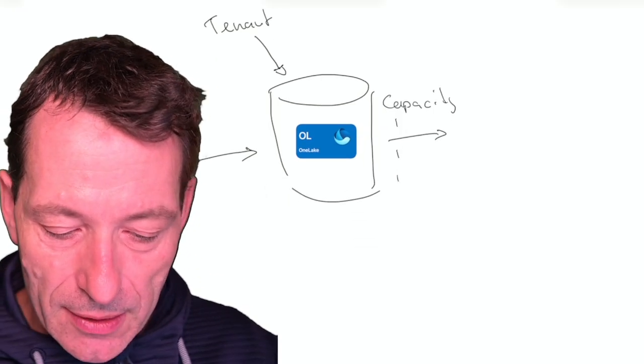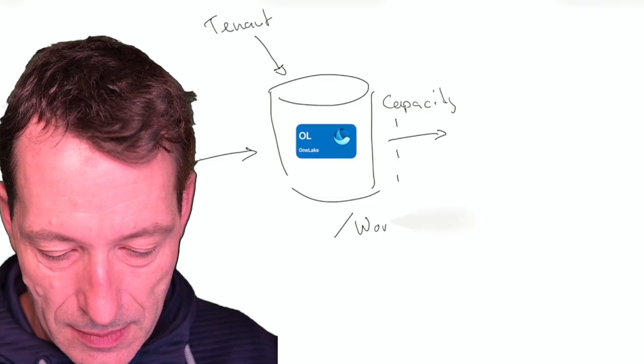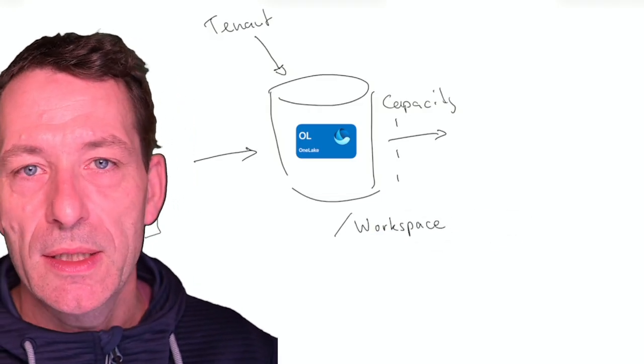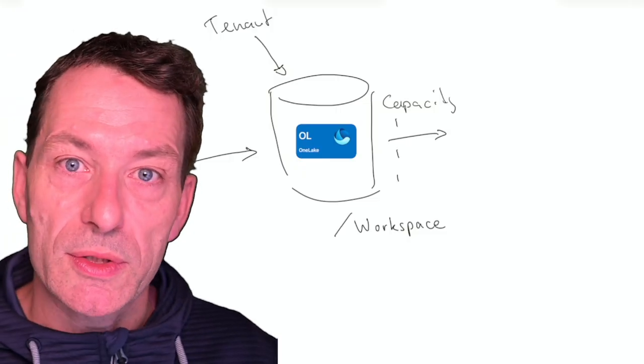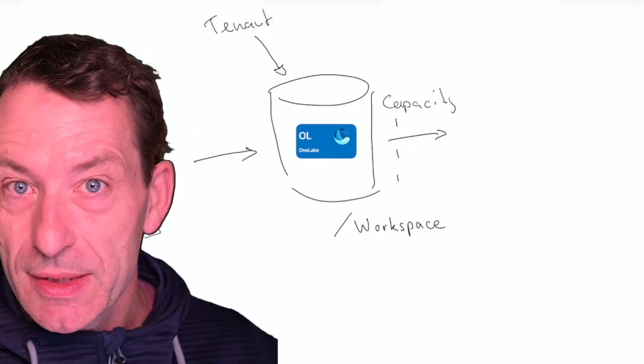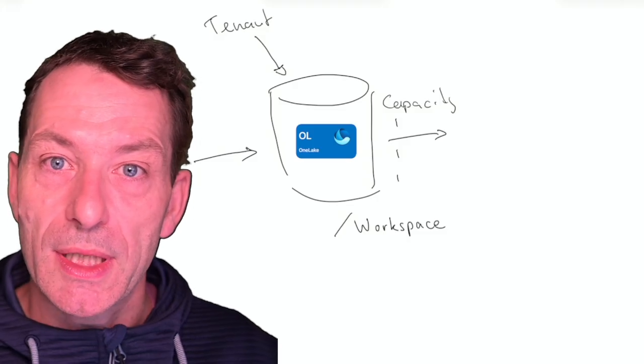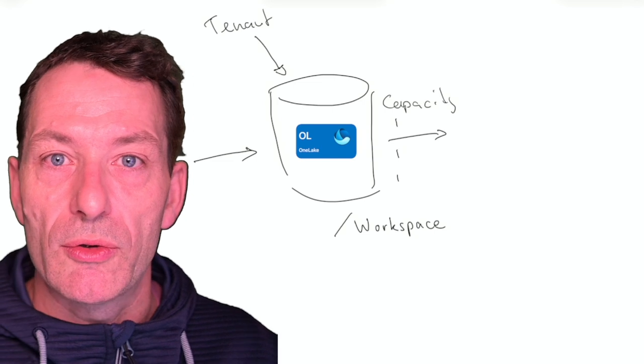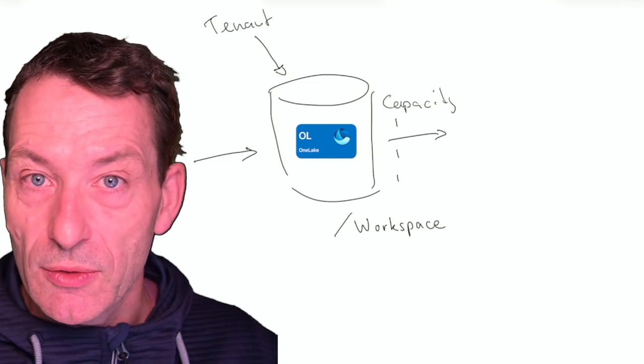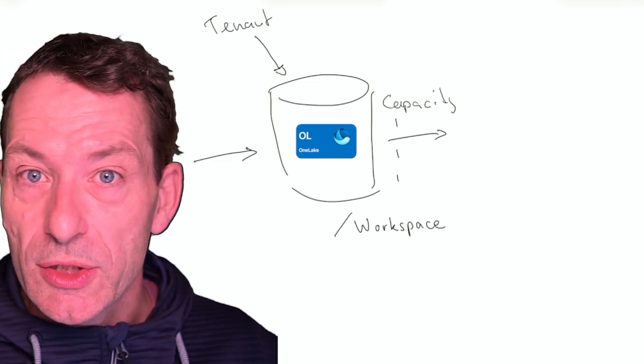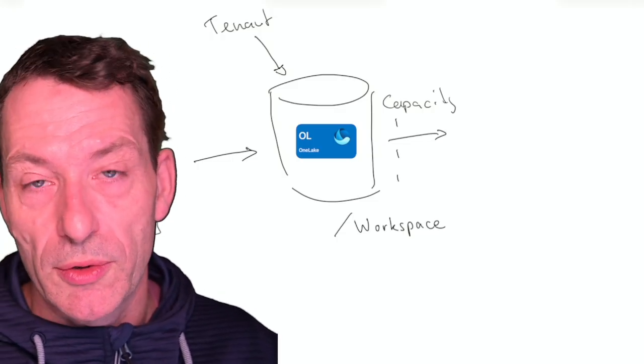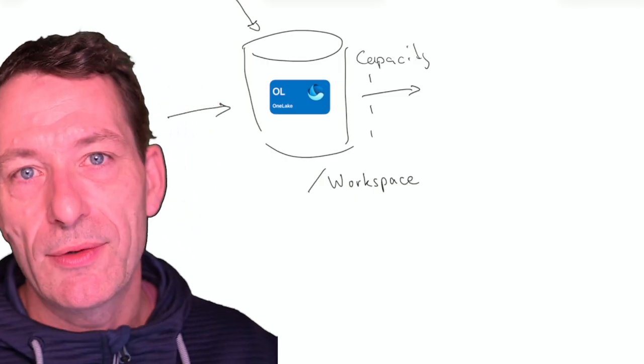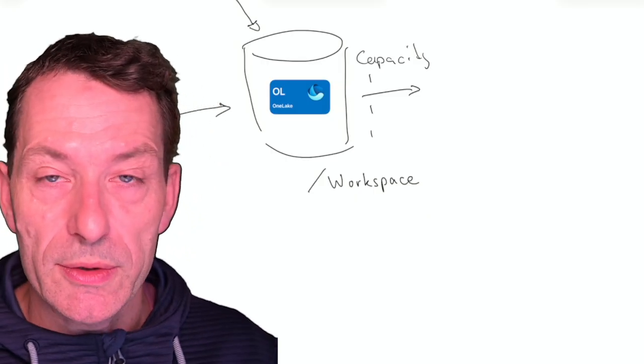The OneLake itself then is organized in workspaces. You can take the workspace as the main principle for OneLake because all security, a lot of settings, and all items are aligned always to one workspace. So it's a little bit like a drive in Windows or a site in SharePoint, a site collection, or maybe an organizational unit in Active Directory or whatever you're referring to.